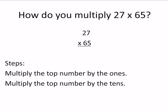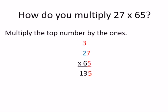So how do we multiply 27 times 65? We're going to multiply the top number by the 1's, and then the top number by the 10's. Multiply the top number by the 1's — well, this is the problem we just did. 27 times 5 we learned was 135. Multiply the 1's: 7 times 5 is 35, then 2 times 5 is 10, plus carry is 13.